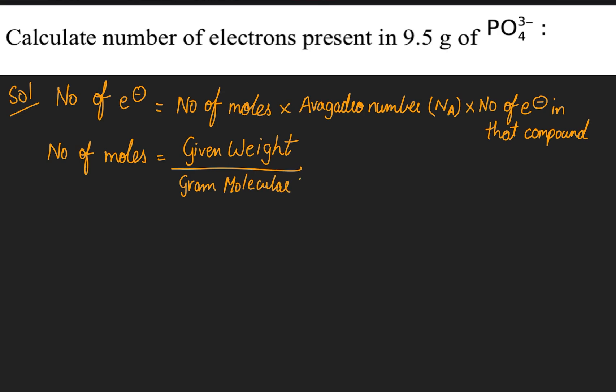The gram molecular weight of phosphate PO₄³⁻ is: phosphorus is 31, and oxygen is 16 times 4, which is 64. So 31 plus 64 equals 95.